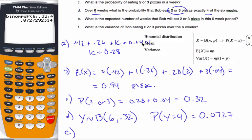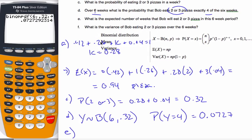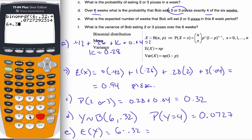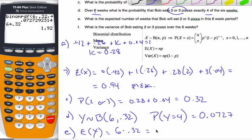Well, one of the things I can do is I can look at my formula booklet. And the formula booklet has this information in it. Here's binomial distribution. Expected value is n times p. And so my expected value of y is simply n times 0.32, which is 6 times 0.32, which is 1.92 pizzas. So this is how many weeks of the six weeks I would expect to eat two or three pizzas.